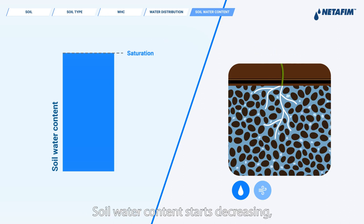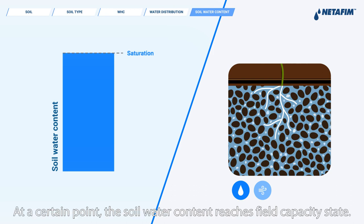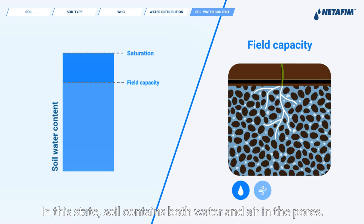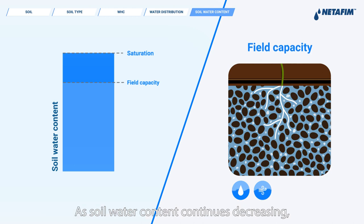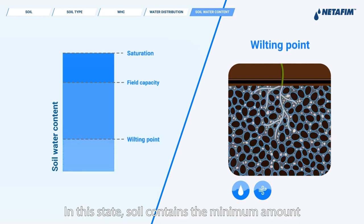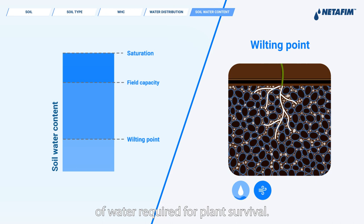Soil water content starts decreasing mainly because of gravitational drainage. At a certain point, the soil water content reaches field capacity state. Field capacity occurs when the upper limit of water that the soil can hold after drainage is reached. In this state, soil contains both water and air in the pores. As soil water content continues decreasing, mostly from plant consumption, it reaches wilting point. In this state, soil contains the minimum amount of water required for plant survival.